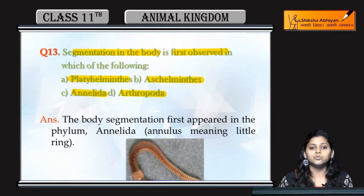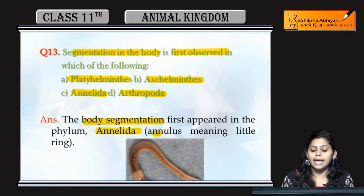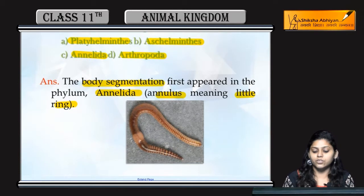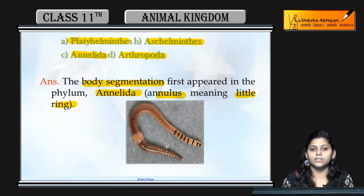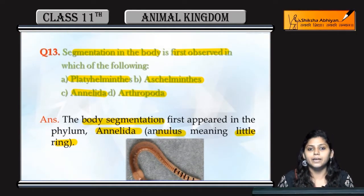Body segmentation first appears in Annelida — the name itself comes from 'anelis,' meaning 'little ring.' As you can see here, the structure of Annelida has small rings. These little rings are what provide segmentation in Annelida, and that is also why they are named Annelida — because of the little rings present in their body.